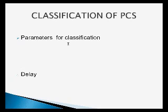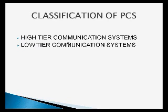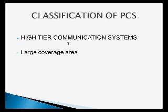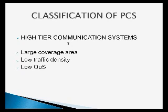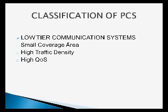Delay: the signal transmitted from a cell site and arriving at a mobile unit will travel from different paths, hence the time of arrival for each path is different, which eventually induces delay in the system. Taking into consideration these parameters, PCS can be classified into two types: high-tier communication systems and low-tier communication systems. High-tier systems support base stations with large coverage area and low traffic densities but provide low quality of service and high delay. Low-tier systems are characterized by small coverage area, high traffic density, high quality of service, low delay, and comparatively smaller cells.